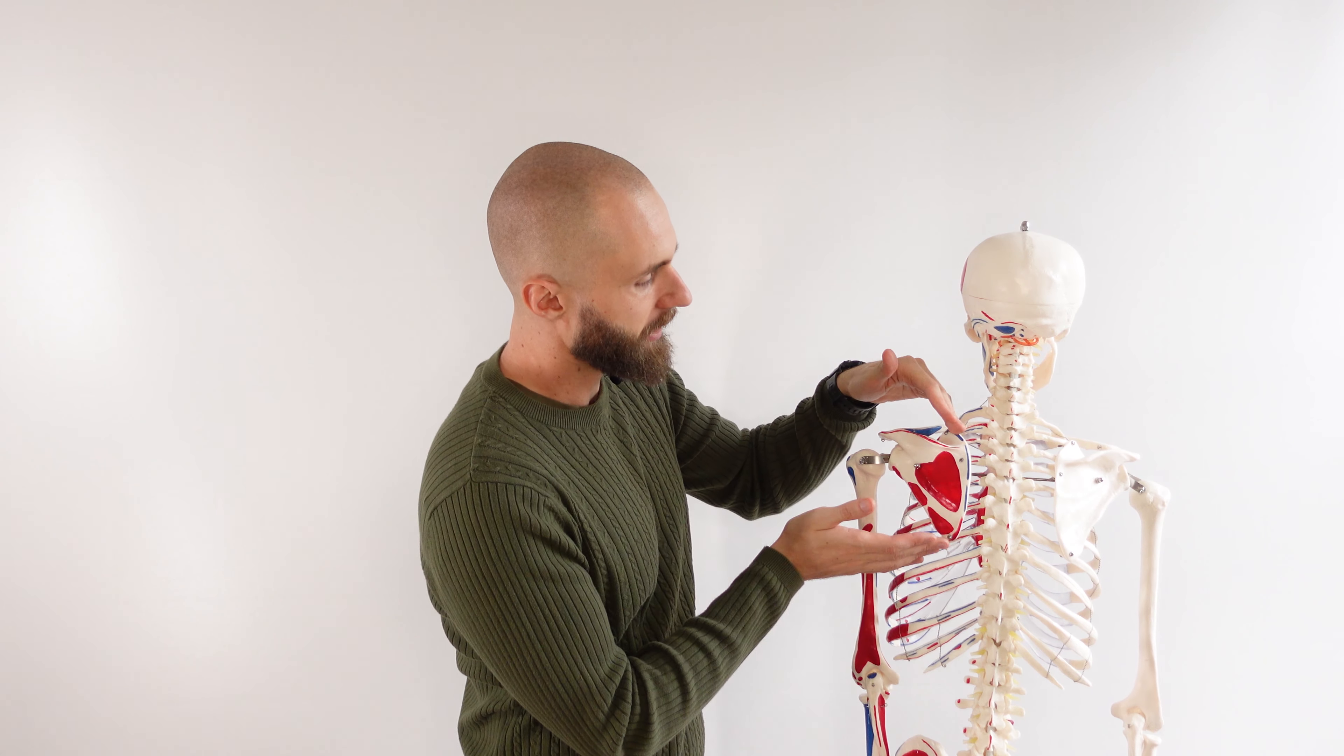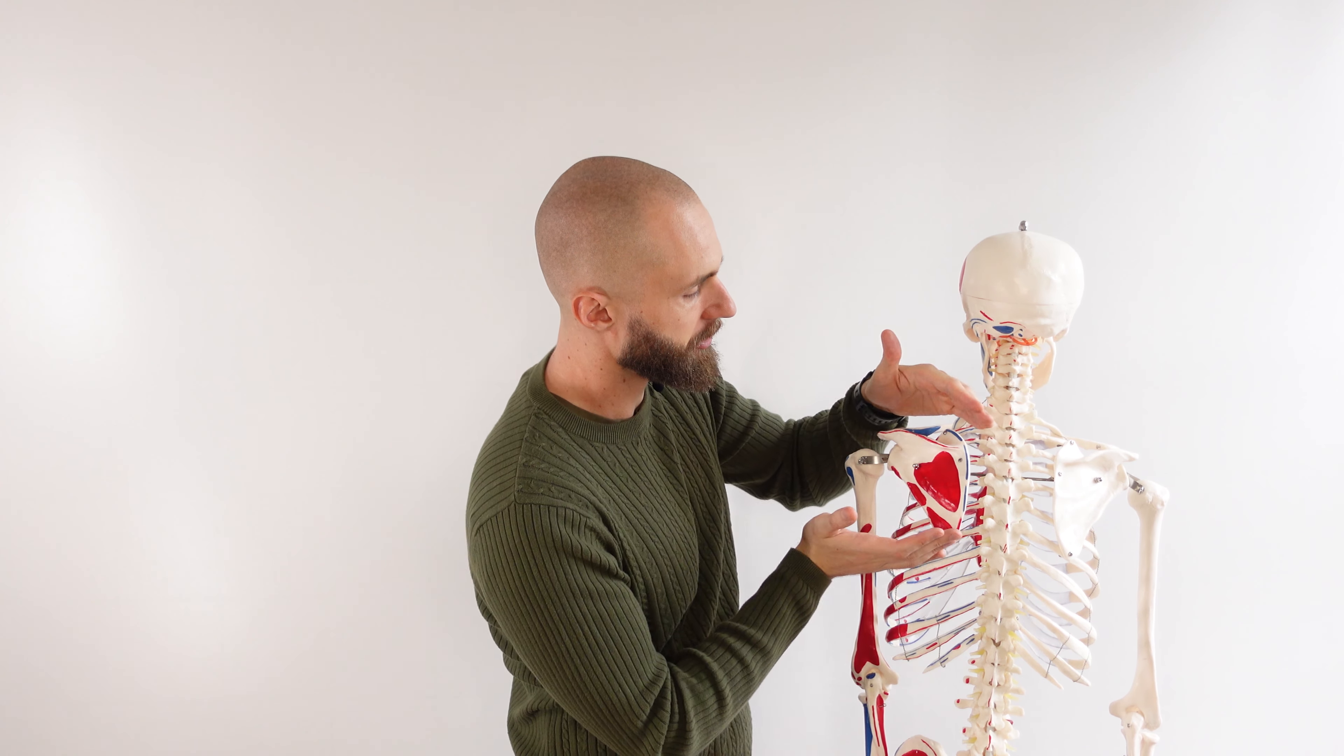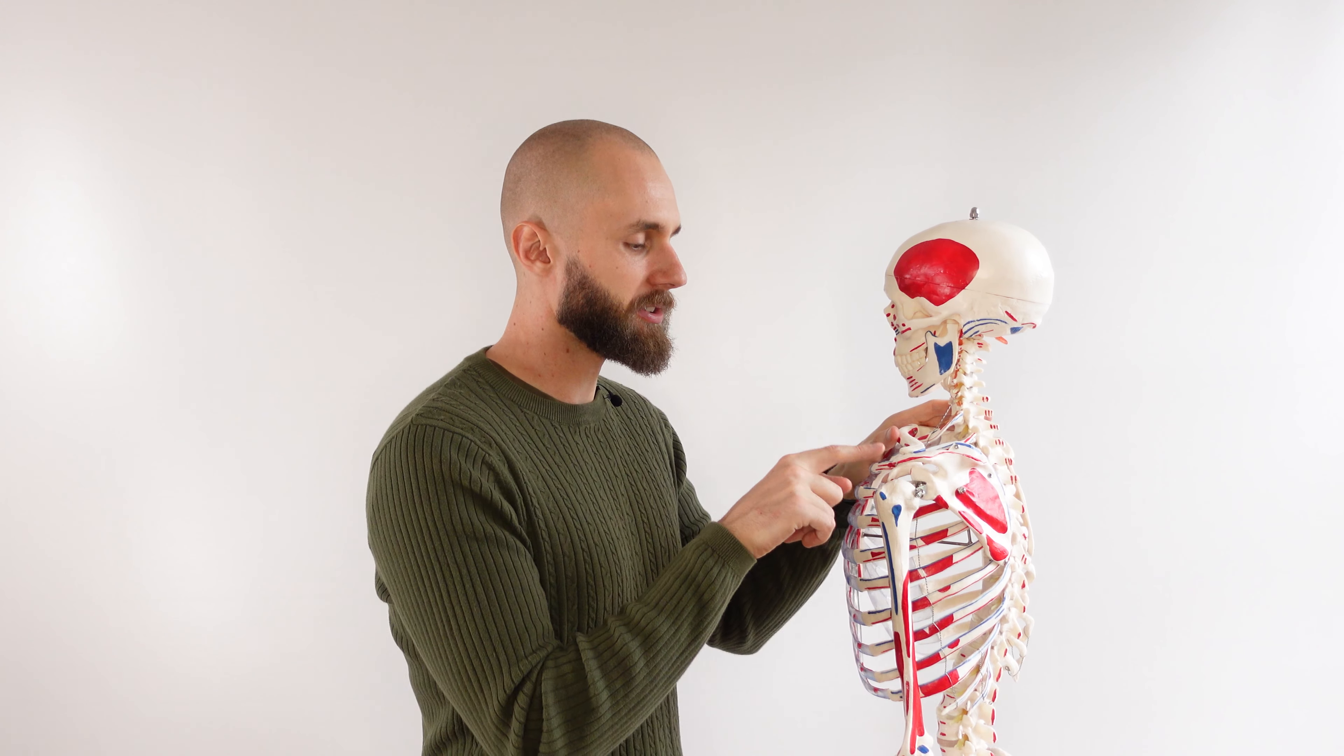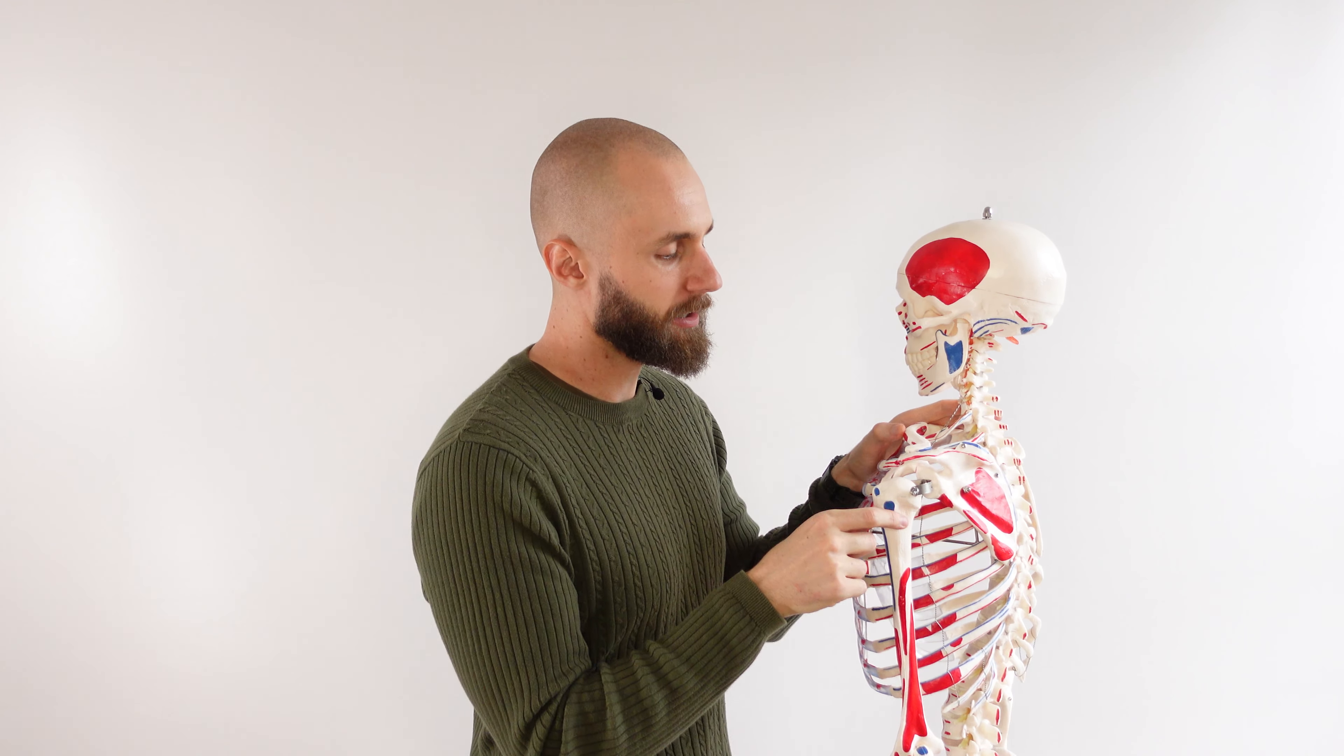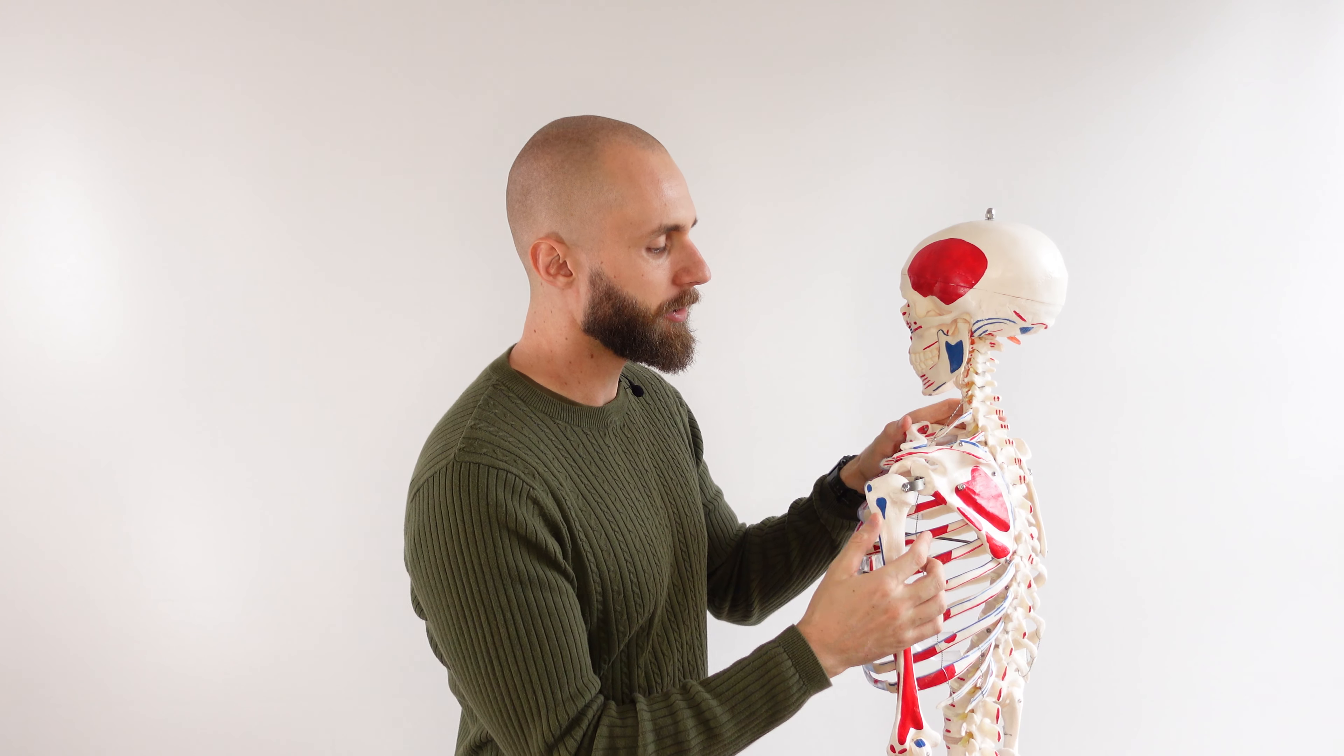Second action is going to be rotation of the scapula, so that's where the scapula rotates in this kind of a direction and that's going to depress the glenoid cavity. So we can see the humerus, head of the humerus right here, head of the humerus sits in the glenoid cavity right there. So essentially it's going to move the glenoid cavity a little bit lower.